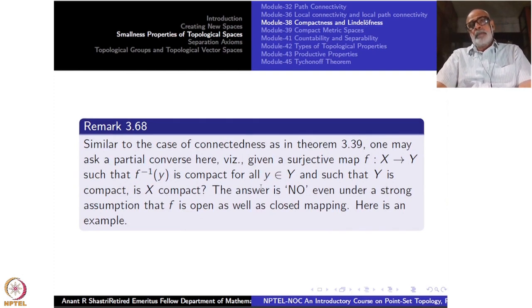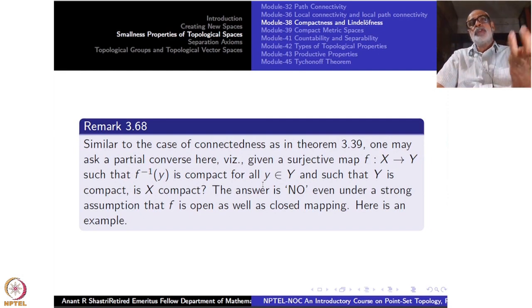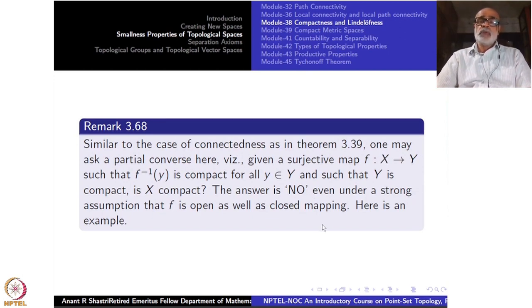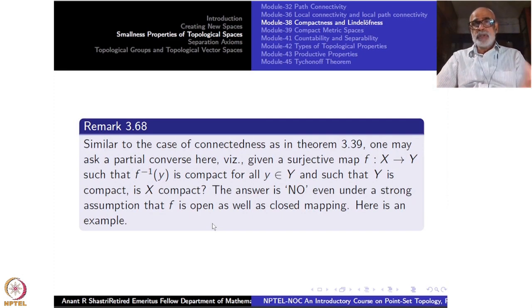We have previously proved a theorem about quotient maps where, if each fibre is connected and the base space is connected, then the total space is connected. Similarly, one might expect: if Y is compact and all the fibres f⁻¹(y) are compact, will X be compact? The answer is no, even under the stronger assumption that f is an open or closed surjective mapping.